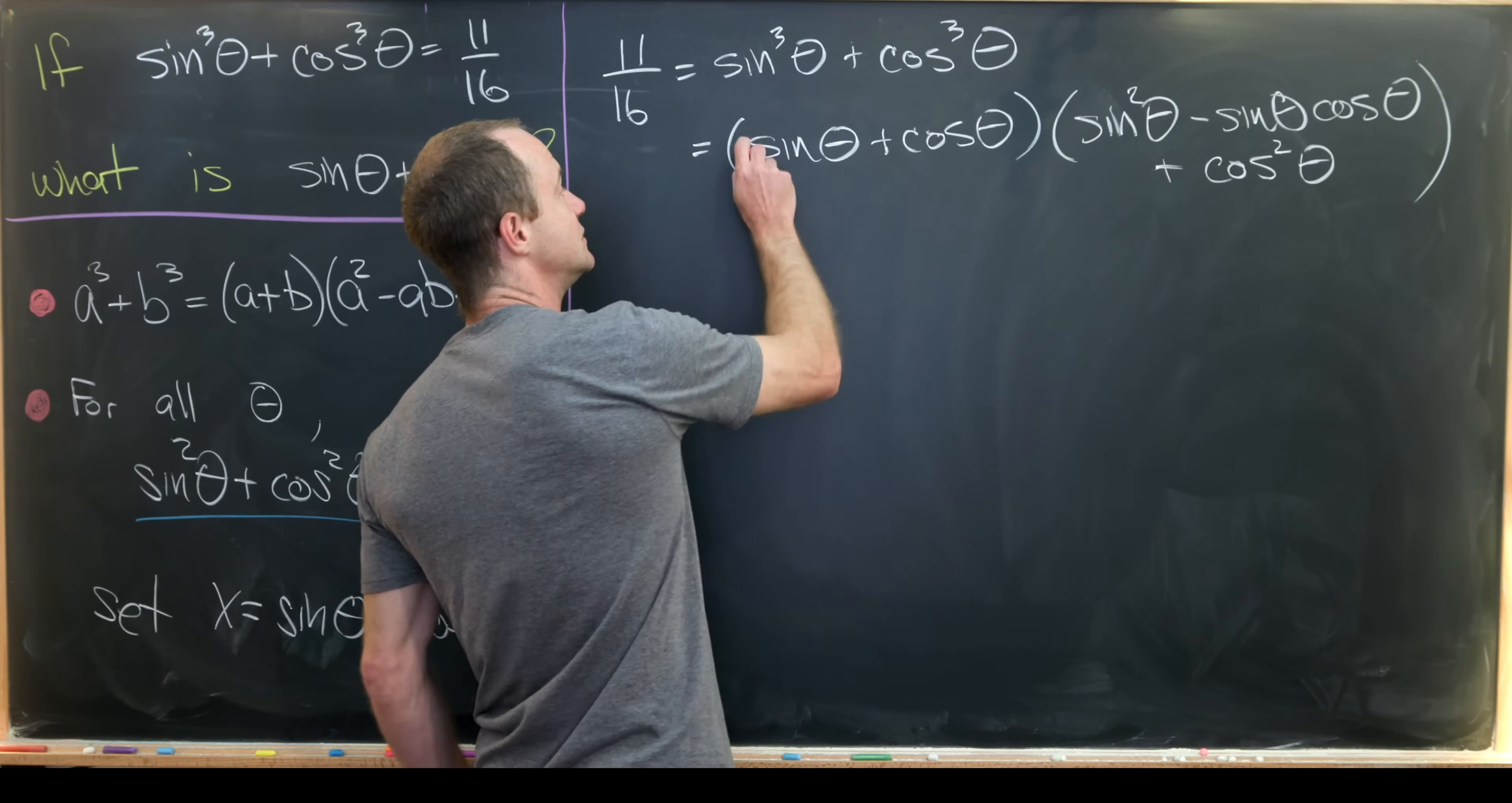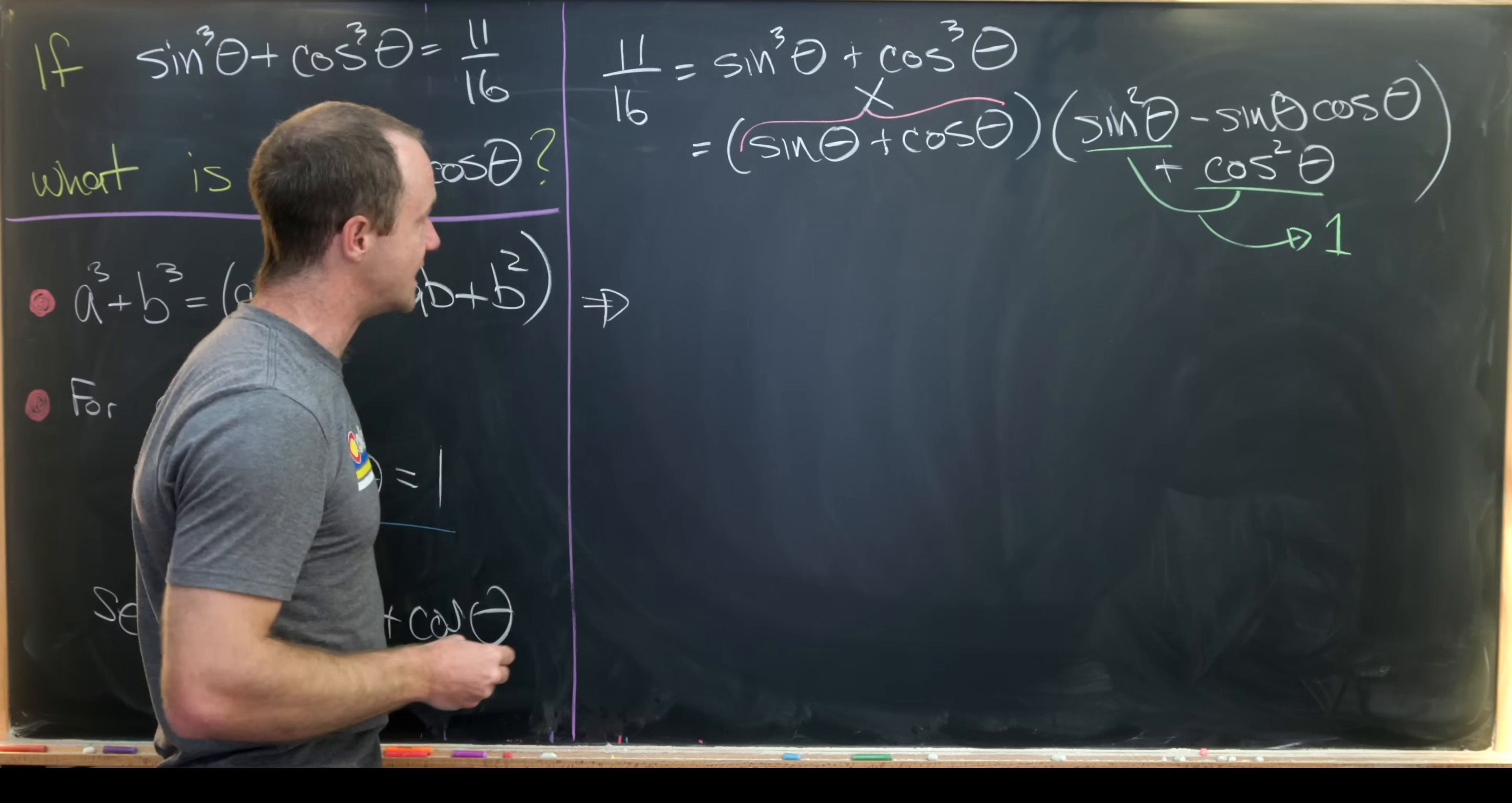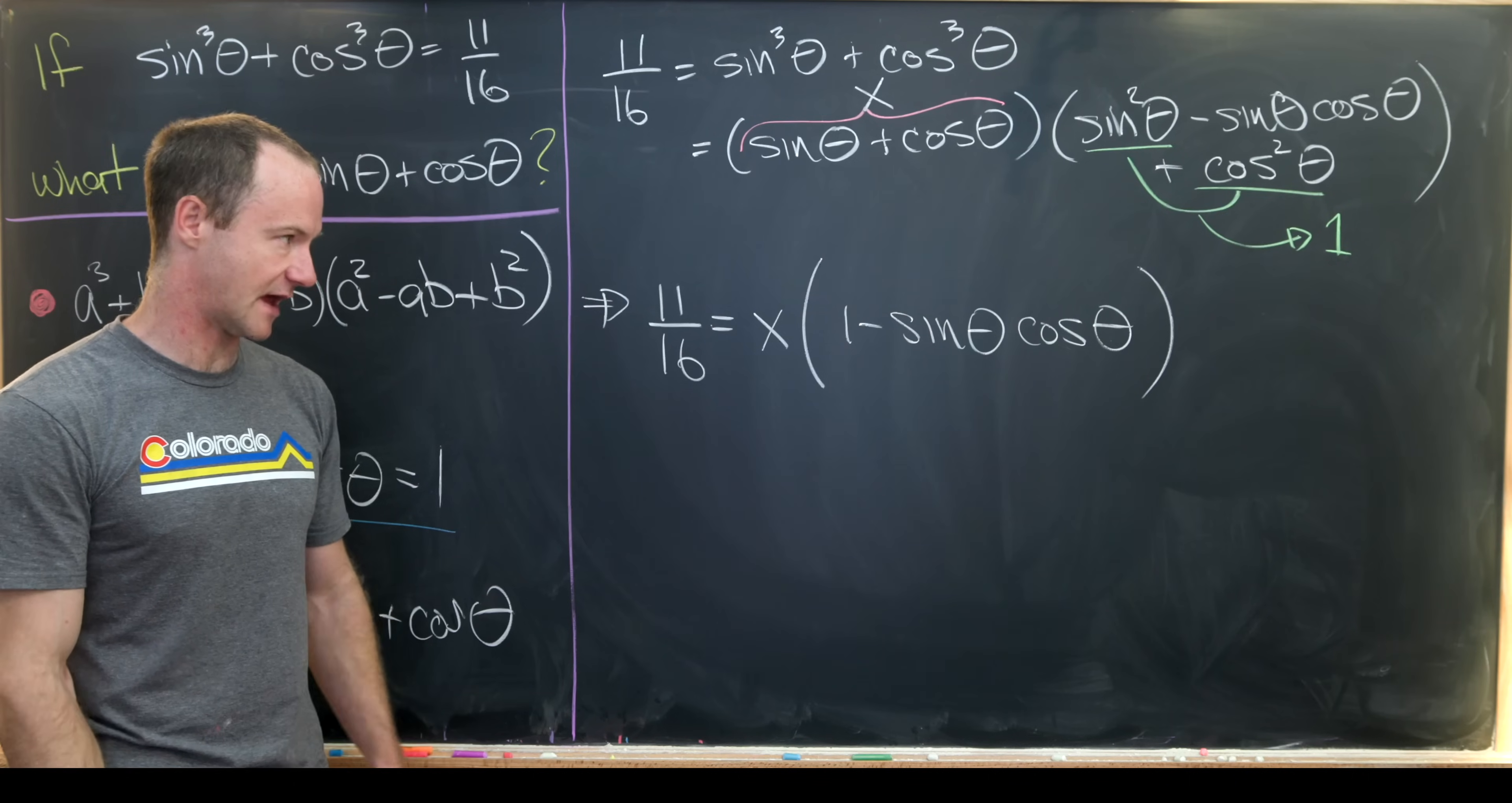Now let's notice using our notation that was introduced, sine theta plus cosine theta is equal to x. And then by the Pythagorean trig identity, we know that this sine squared plus cosine squared is equal to the number one. So that allows us to simplify our equation quite a bit. Now we have 11 over 16 equals x times one minus sine theta times cosine theta.